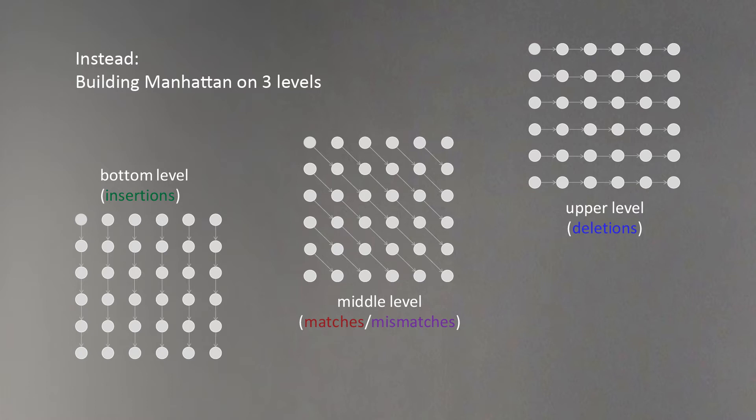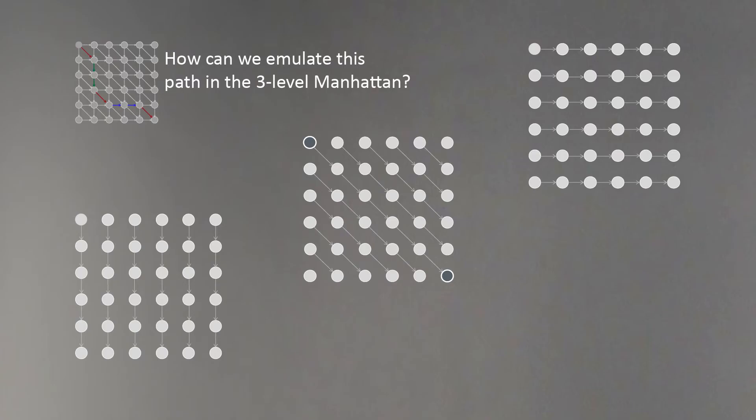The upper level will represent deletions and will contain only horizontal edges of our graph. Still, we need to find the path between the top left corner to the bottom right corner. We can move in our Manhattan grid, but we also can move between these layers of the grid.